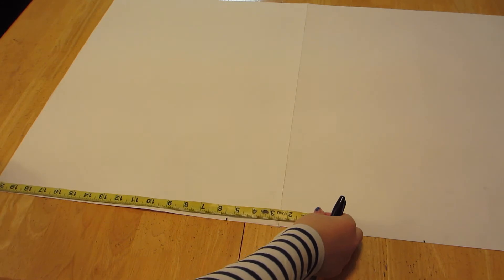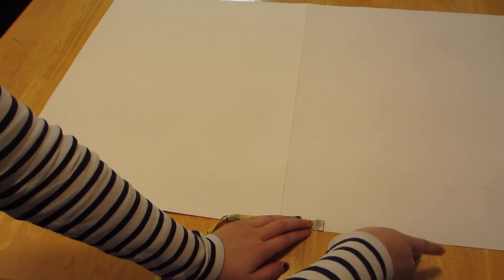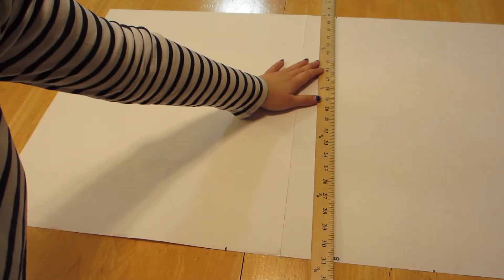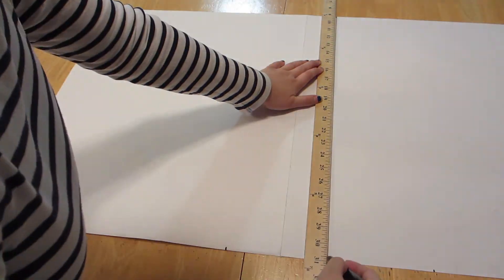Then, get the center point of your length by either folding your paper in half or marking out half of the length measurement. You're going to repeat the same step at the top of the paper and then draw a straight line connecting the two points together.